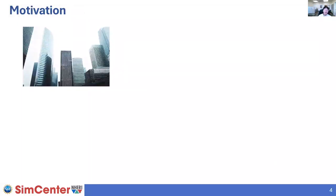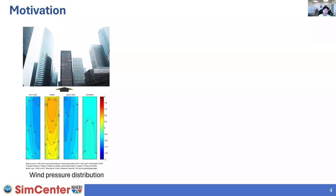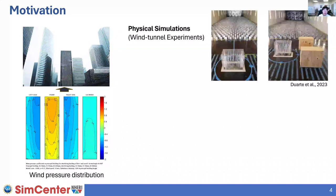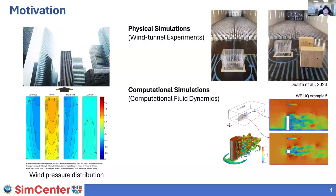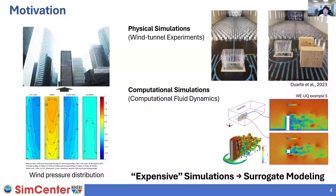Urban building structures are subjected to various kinds of external threats, and strong wind is one of them. To evaluate the wind risk, we often rely on wind pressure distribution, which can be predicted by either physical experiments or computational simulations. The problem is that both approaches are considered to be expensive, requiring lots of resources and time to get the prediction values.